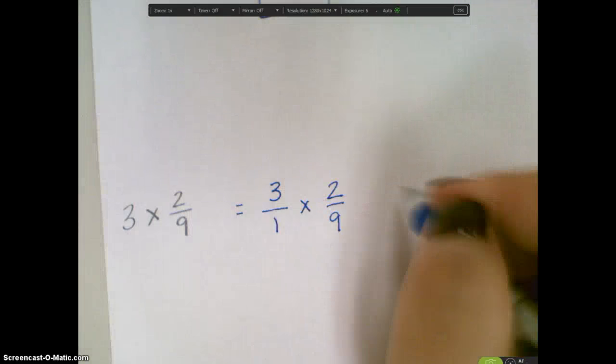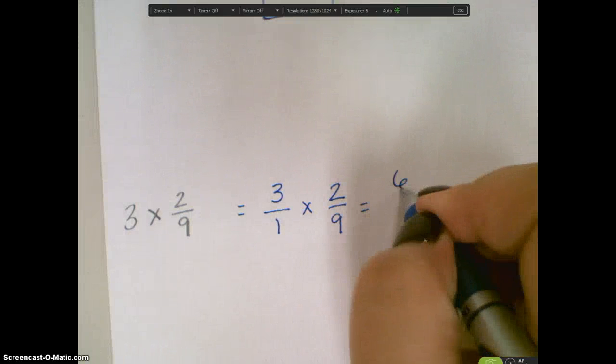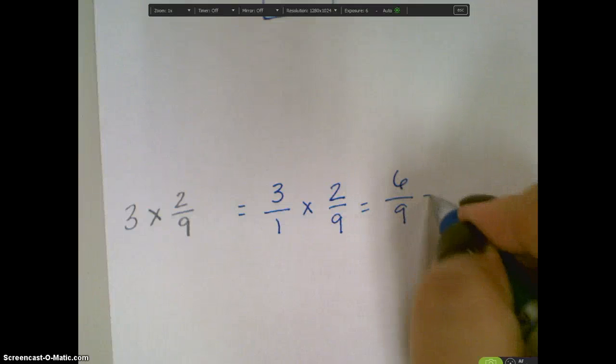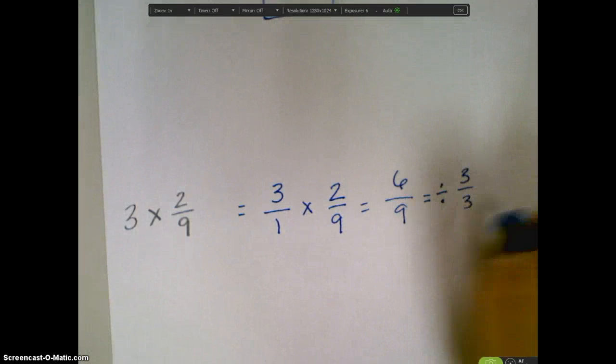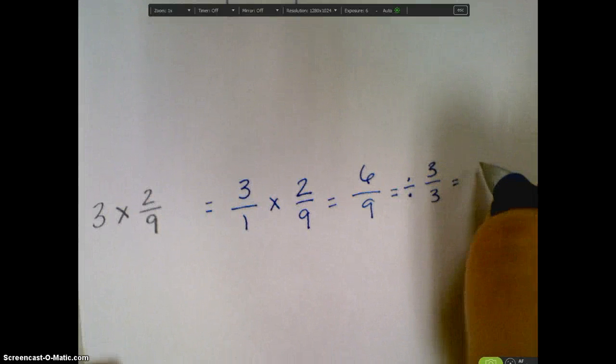There's a couple ways you can solve this. You can just multiply across. 3 times 2 is 6 ninths, and then I can simplify that by dividing by 3 and getting 2 thirds.